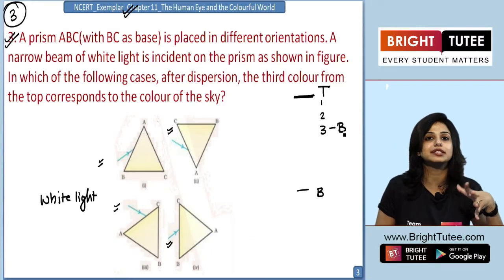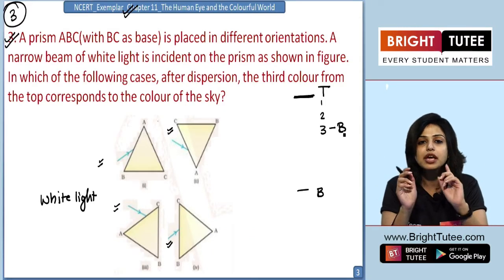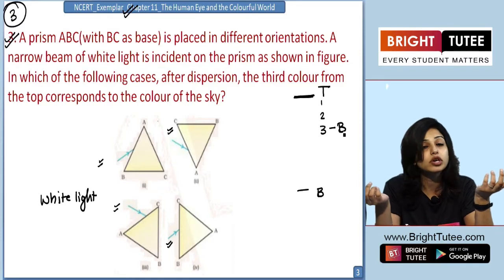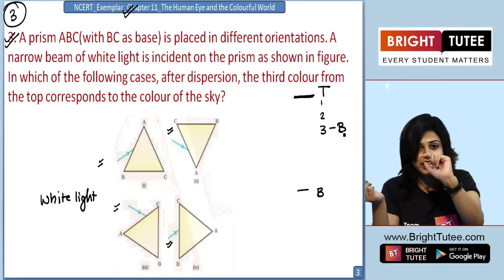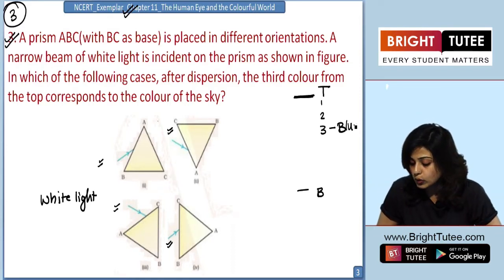Now in this problem, the examiner asks a lot of problems in one go. Obviously we know the color of the sky. What is the color of the sky students? Very correct. It is blue.